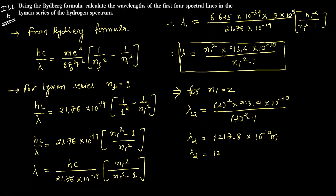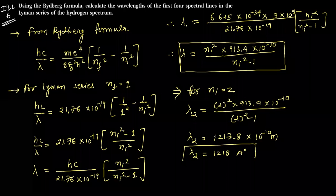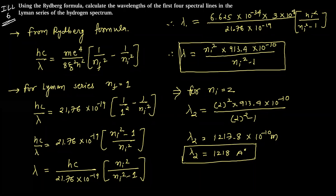equals 1218 angstrom. Similarly, you need to put n i equals 3, then n i equals 4, and n i equals 5. From these you'll get second, third, and fourth spectral line wavelengths. This portion you can do yourself. Thank you.